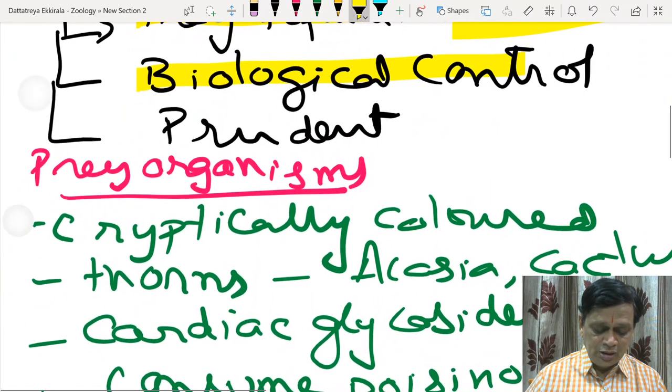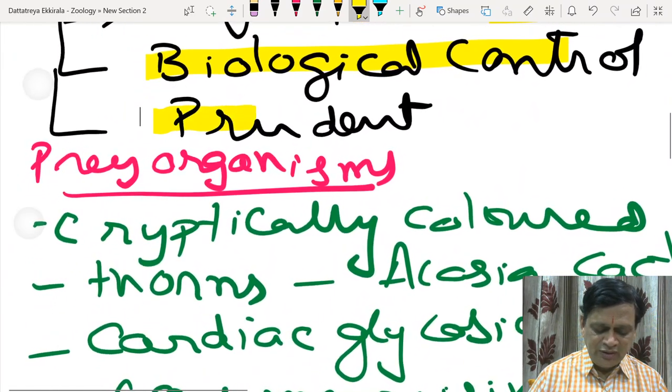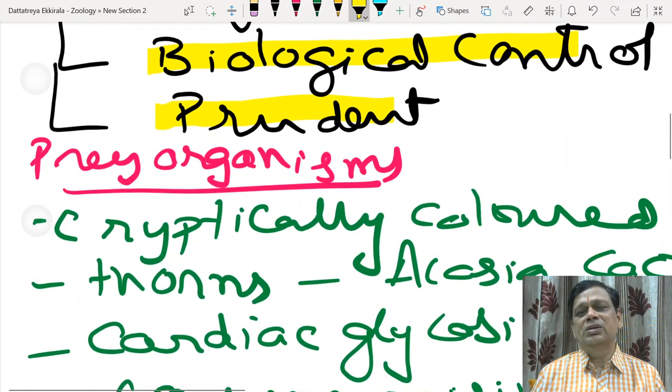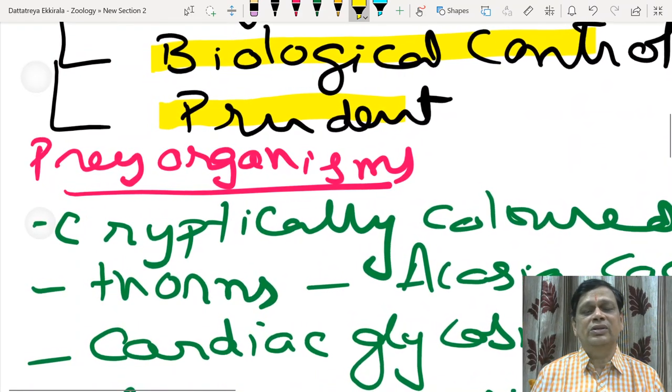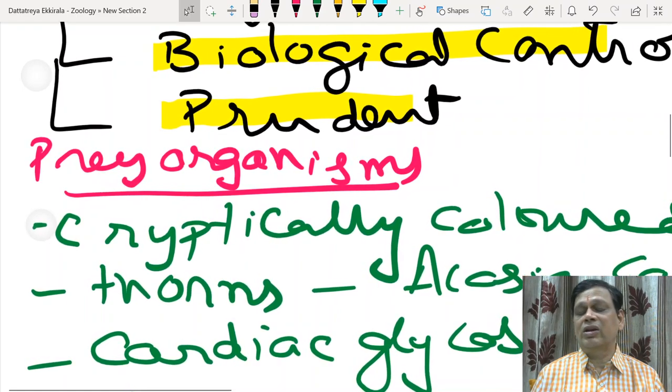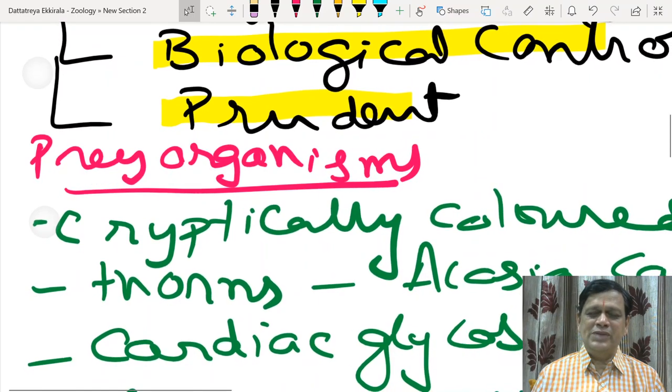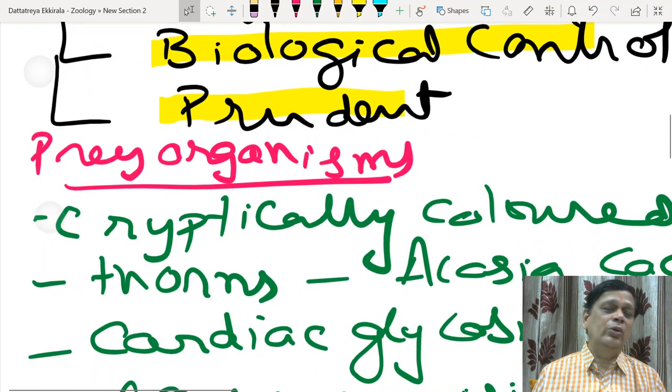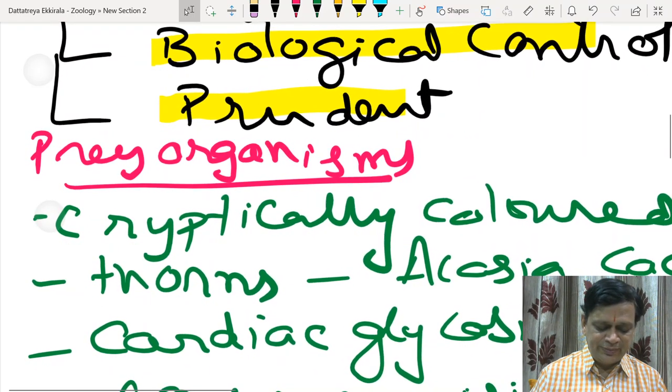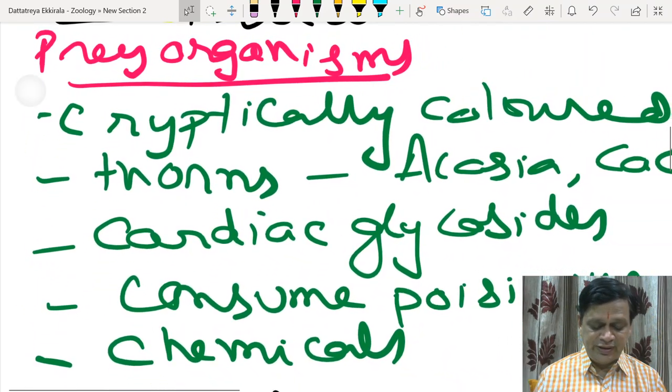Even though it is not useful, many times human beings harm others. But other animals or other organisms are not like that. They are very intelligent, prudent. Prudent means practically concise. They don't kill their prey organisms. So that is the intelligent thing there.